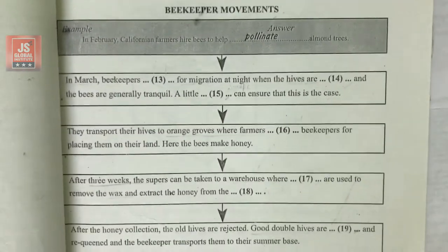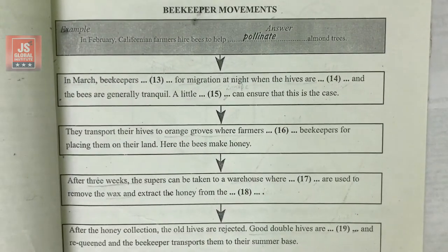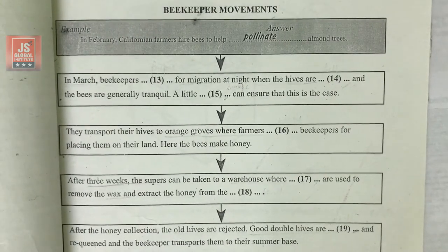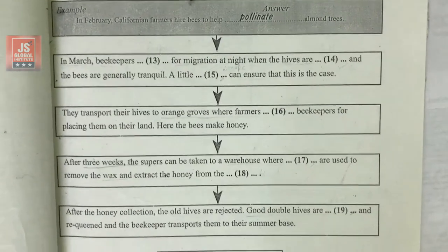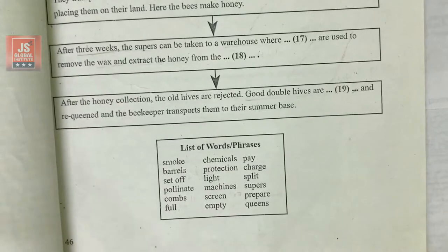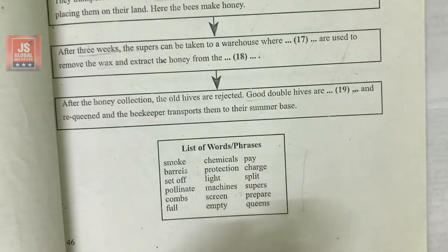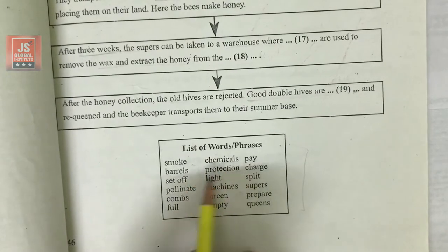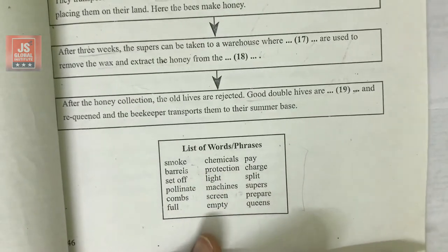Sometimes options are not given in the fill-in-the-blanks type of questions, but sometimes they are given. So you have to find out the best suitable answer from the given options. You have to choose from the box — you cannot write it on your own. Even if you have written the correct answer on your own, it would be marked wrong. So you have to choose carefully from the given options.